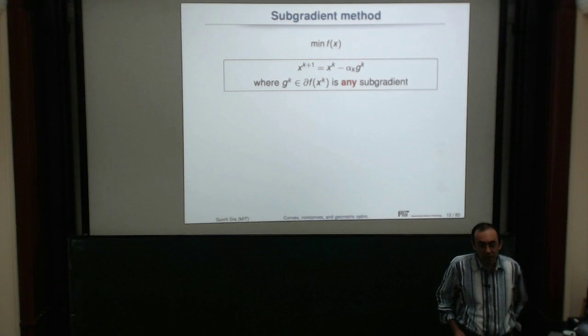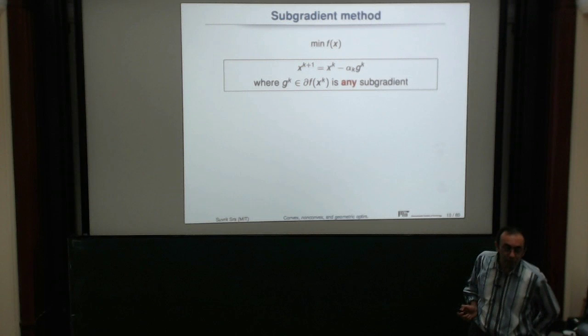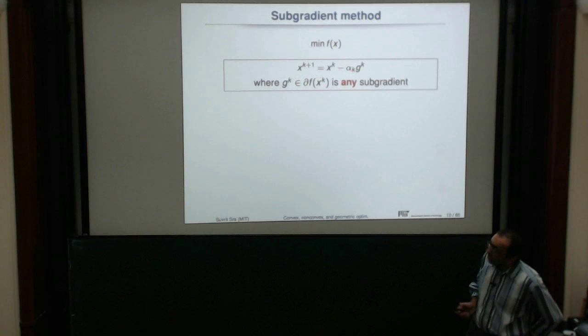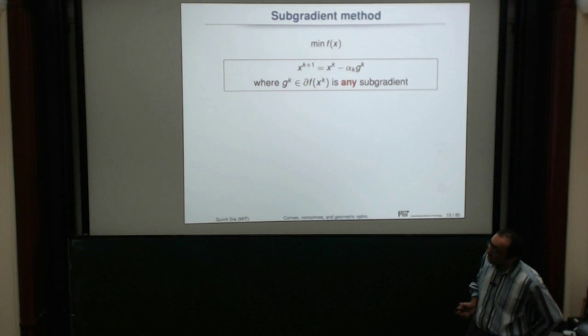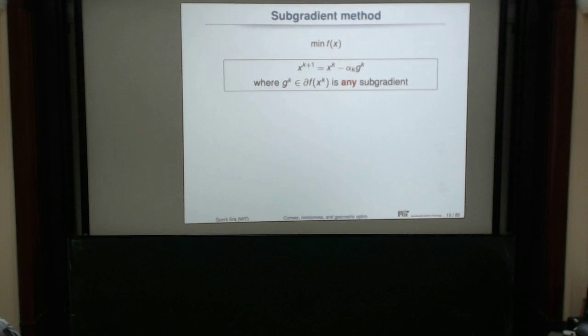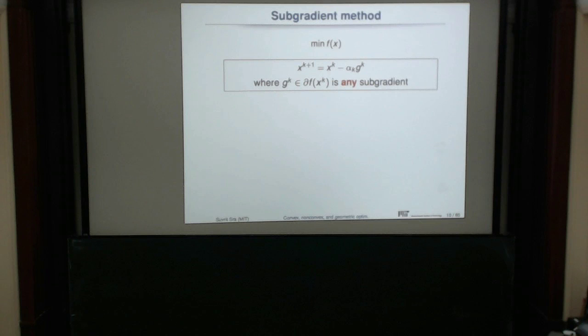In the world of convex analysis we have a nice analog of differential calculus — the sub-differential calculus — with very similar calculus rules like chain rule and addition rule. Since gradients can be replaced by sub-gradients, can we do gradient descent with sub-gradients instead? It's something one may naively try, and it was considered an audacious idea when Norm Shor introduced it in the Soviet Union back in the late 1960s.